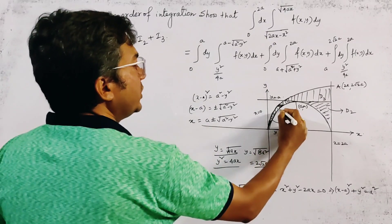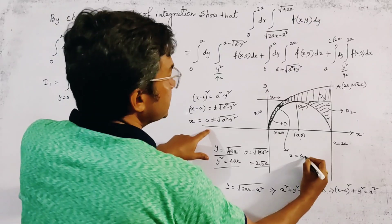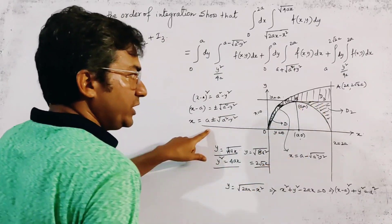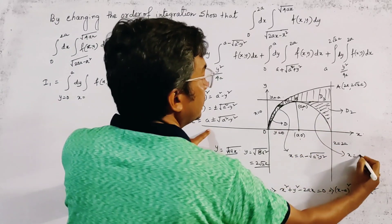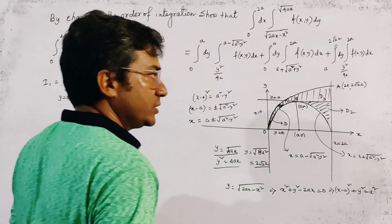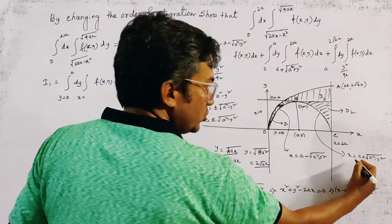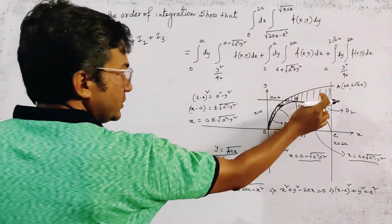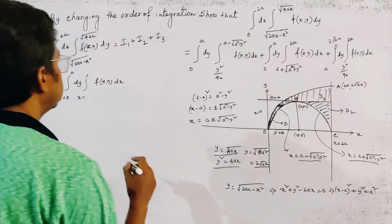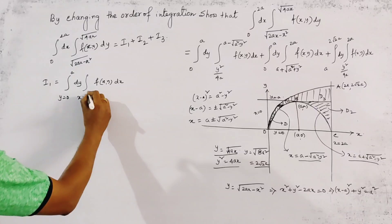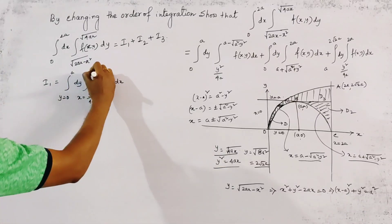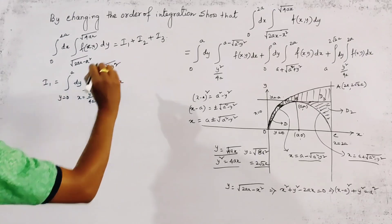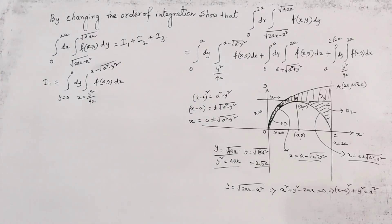For the arc from O to B, we use x = a - √(a² - y²), and for the arc from B to C we use x = a + √(a² - y²). The lower range of x comes from the parabola: x = y²/4a, and the upper range is x = a - √(a² - y²). This gives us the first sub-integral i1.